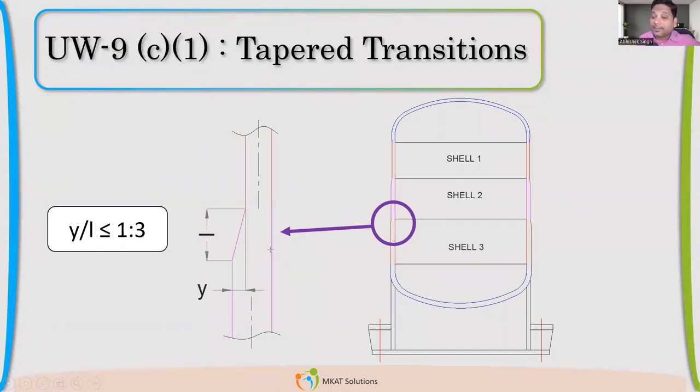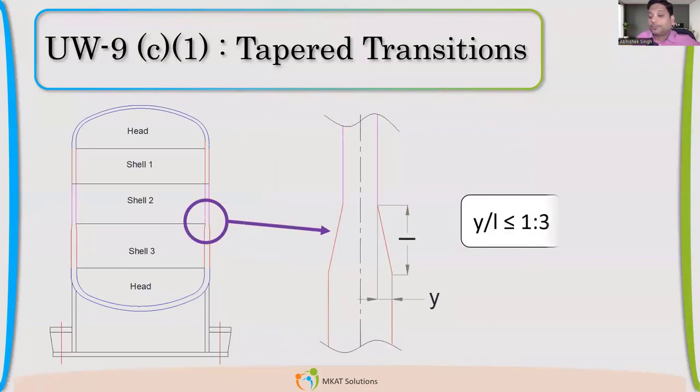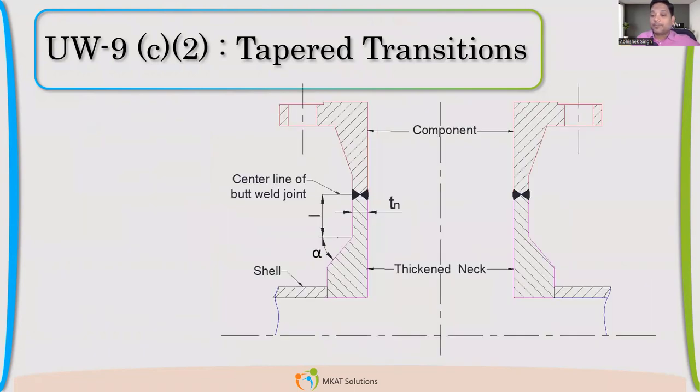I can either match the ID of that unequal thickness part or if I want, I can do the centerline matching also. Both of this is permitted. But generally, we try to match the ID. So, you will see always the first case which we discussed. You will see that kind of design mainly.